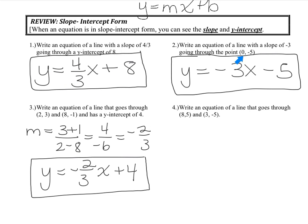Here you just had to recognize that the ordered pair (0, -5) is a y-intercept, so that's the constant. For number 3, you're given the y-intercept, so you know it's going to be plus 4. But you're given two ordered pairs, so you actually have to use them to find the slope — which I found to be negative 2 thirds.